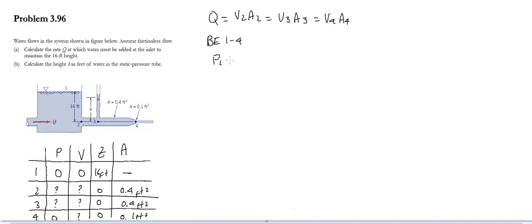So we do p1 plus 1 half rho v1 squared plus gamma z1 is equal to p4 plus 1 half rho v4 squared plus gamma z4. Okay, and let's cancel things out. The velocity and the pressure at point 1 is equal to 0. And then we also know that the elevations at point 4 are equal to 0. And also the pressure at point 4. And I mislabeled this, this should have been 4, 4 at every point.